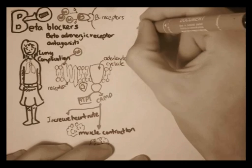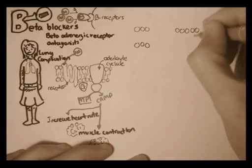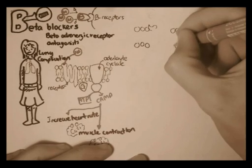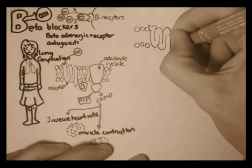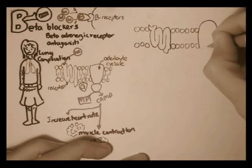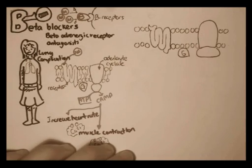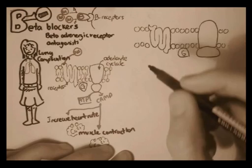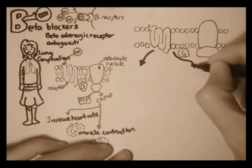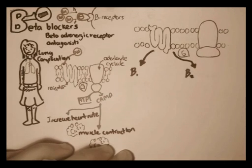Here we have the cell membrane of various organs that have beta receptors, such as the eyes, the heart, the kidneys, and the lungs. There are many types of receptors: beta type 1, beta type 2, beta type 3, and beta type 4, but there are mainly two — beta type 1 and beta type 2. They are found in varying amounts in each organ; some organs have more beta type 1 receptors and others have more beta type 2 receptors.